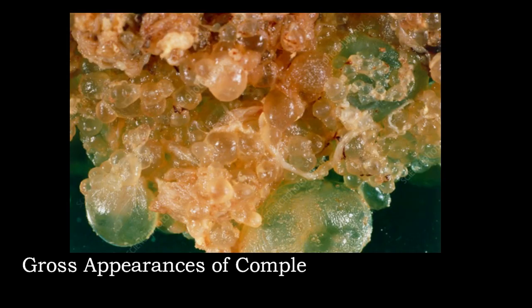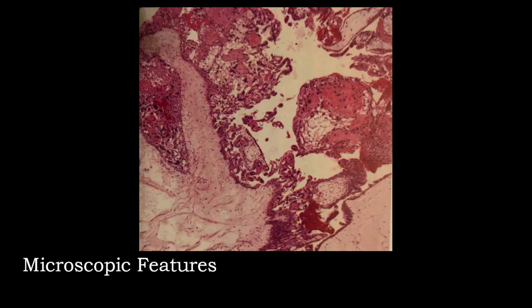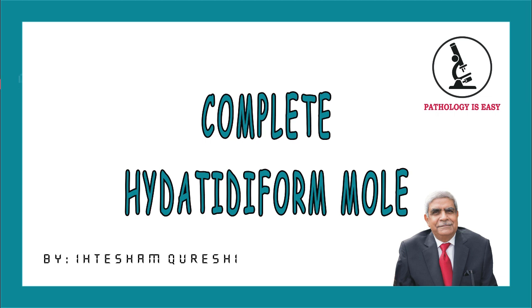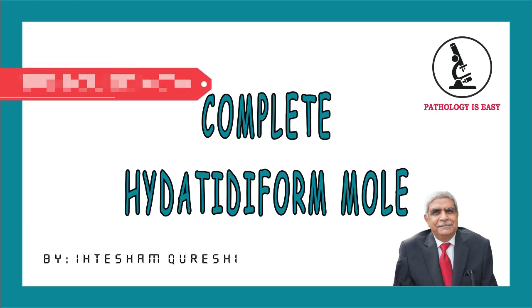This photograph shows the gross appearances of complete hydatidiform mole, in which there are variable-sized grape-like structures, which are actually chorionic villi with hydropic degeneration. This micro photograph shows the microscopic features of hydatidiform mole, in which the chorionic villi have loose edematous stroma without any vessel or nucleated red cells, and there is hyperplastic proliferation of trophoblast seen around the circumference of the villus and in the perivillous region.